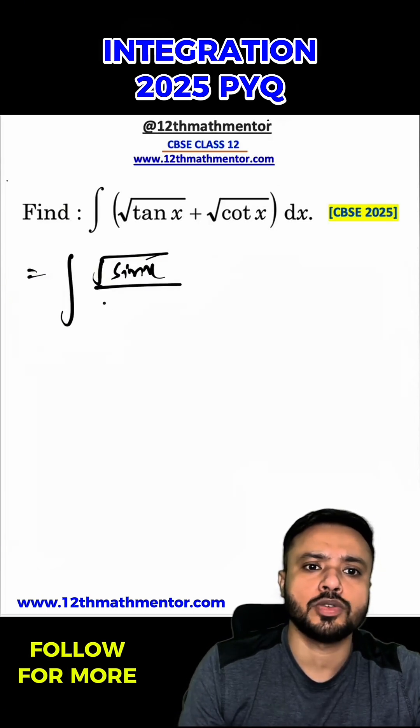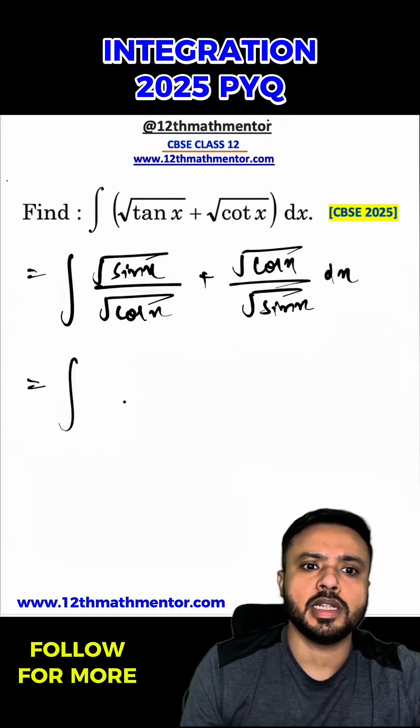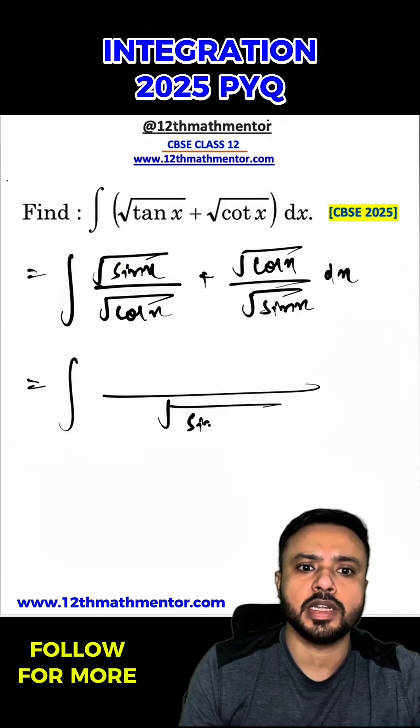So I'll write √(tan x) as √(sin x)/√(cos x) + √(cos x)/√(sin x) dx. Now I will take the LCM of the denominator, so I can write it as √(sin x cos x) in the numerator. I'll have sin x + cos x dx.